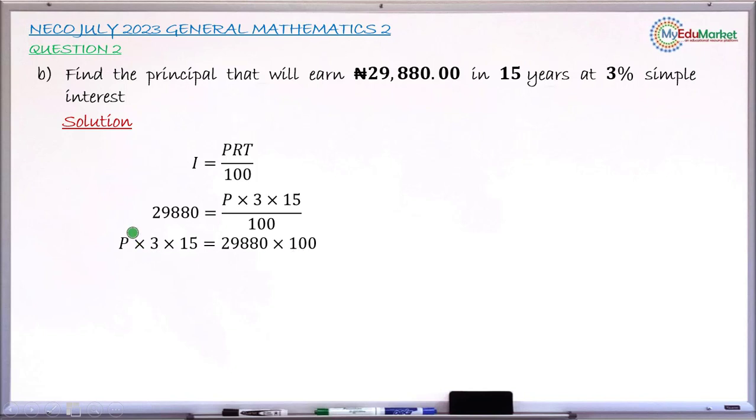P is what we want to find. Divide both sides by 3 times 15. You now have P on the left. It equals 29,880 times 100, everything divided by 3 times 15.